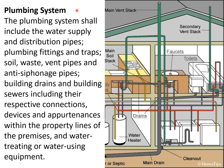Now we will understand more about the plumbing system. The plumbing system shall include the water supply and distribution pipes, plumbing fittings and traps, soil, waste and vent pipes, and anti-siphonage pipes, building drains and building sewers including their respective connections, devices and apparatuses within the property lines of the premises and water-treating or water-using equipment.